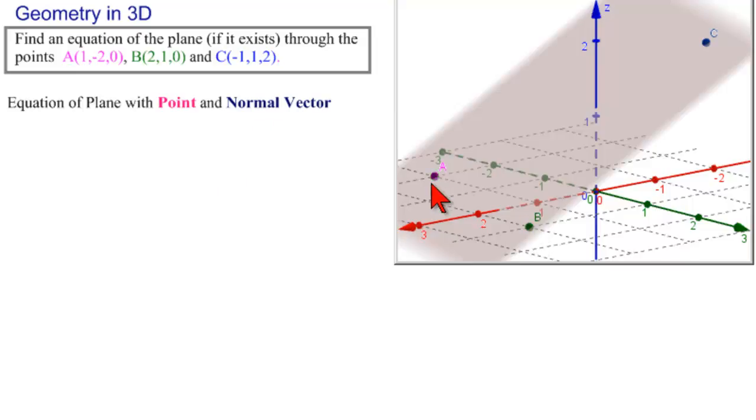AB lies on the plane, and AC lies on the plane, and if we know two vectors, we can find a normal to them by using their vector product. That is, AB and AC, and what we want to do is find this normal vector here. So we're going to find AB and AC, take their vector product, and get this normal vector. Then we will have a point and a normal vector.